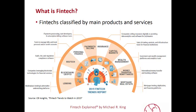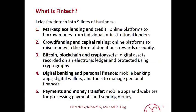CB Insights, the data technology consultancy out of New York, provides this map of the FinTech universe, classifying FinTech by its main products and services. As you can see, there are many different ways that you could classify financial technology companies. I'm going to use nine lines of business.